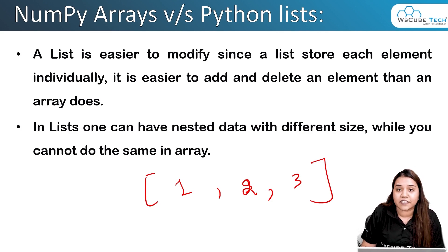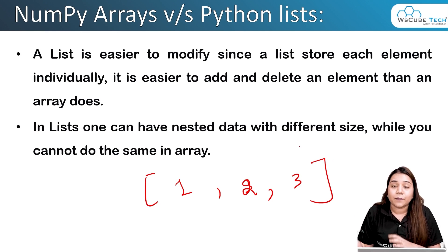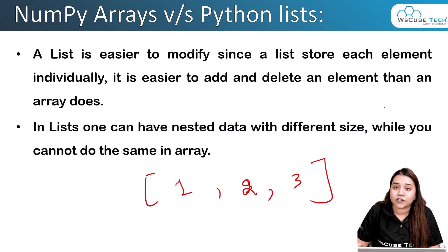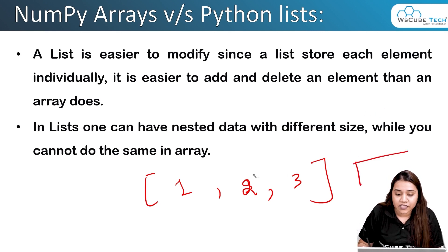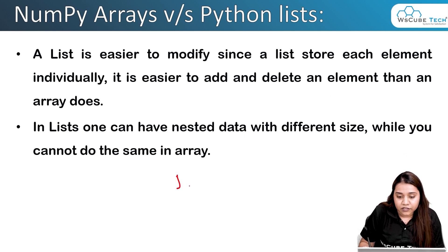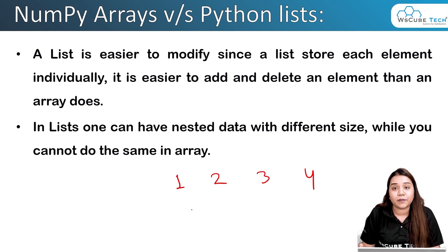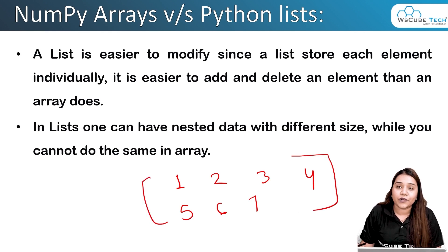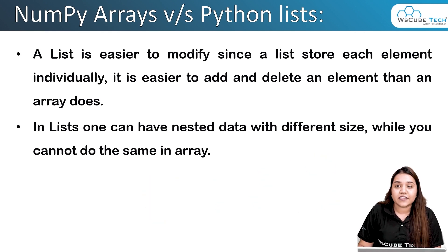In a list, one can have nested data of different sizes, but in an array nested data must be of uniform size. For example, if you have a row of one, two, three, four and want to add another row, it must also have four elements — you cannot have three elements like five, six, seven. You need to be careful about maintaining consistent sizes inside an array.